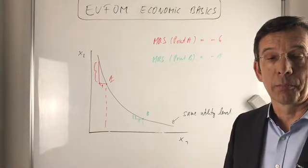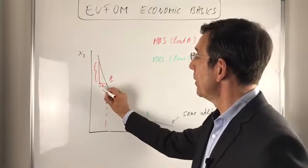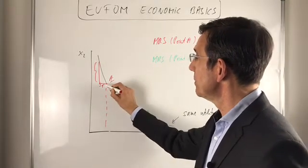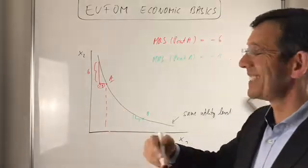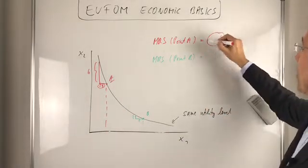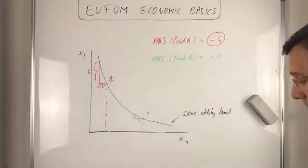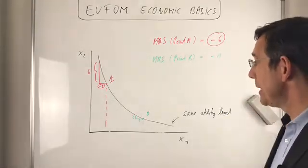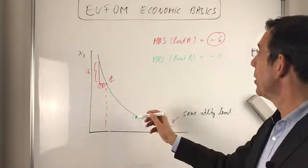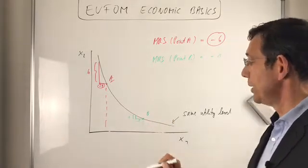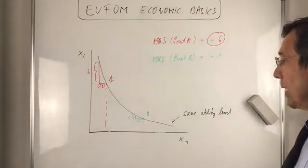Now take a numerical example to understand the marginal rate of substitution. We said we have to give up one unit of x1 — that's minus one — and you have to compensate a household by six units. So this means the marginal rate of substitution is minus six. And here in point B, if you have to give up one unit of x1, you have to be compensated by, let's say, one unit of x2. So that's not exactly drawn, but at least you get the message.